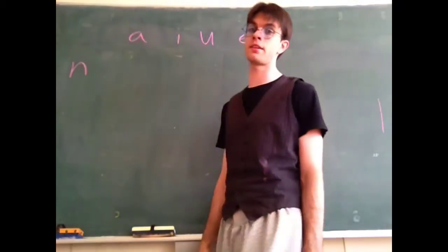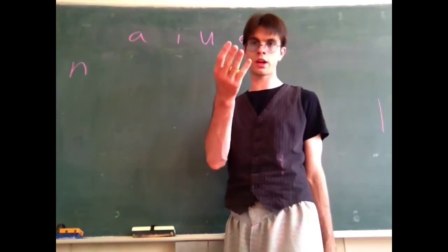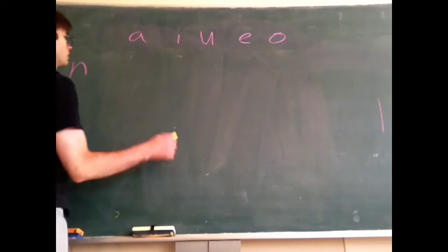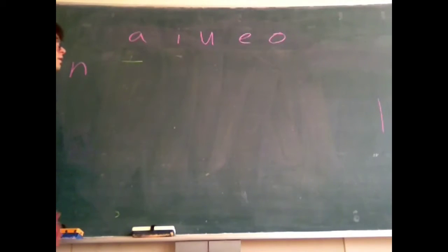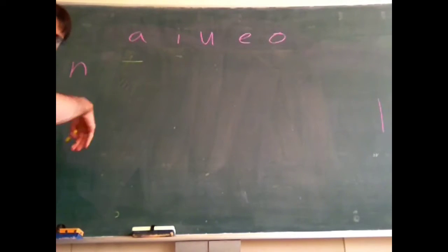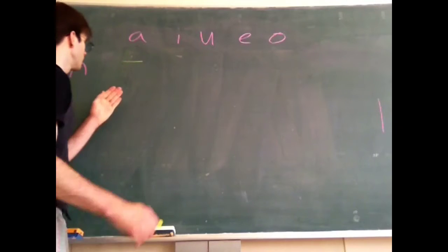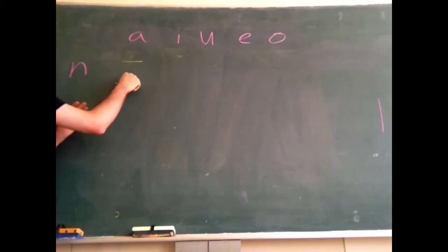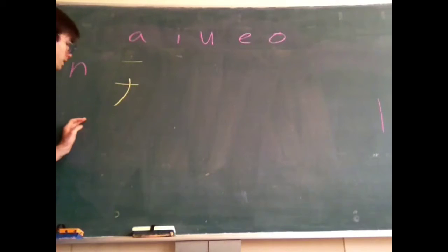All right, next up is the N set. Na, ni, nu, ne, and no. Na is relatively easy. Na starts with one like horizontal line. Then next one here, and then it just sort of comes down. And that's na. That's the whole thing.